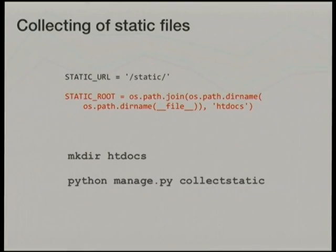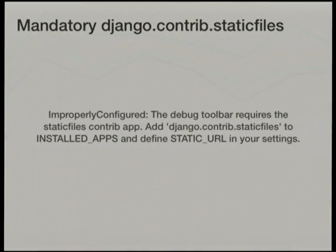Django has a static files application, but if using a WSGI server integrated with a real web server like mod_wsgi, it's much better to use that real web server for static files. We therefore set up a location for static files and run the Django 'collectstatic' management command to collect together all static files from the different installed applications, including Django debug toolbar. Whatever you do, do not remove 'django.contrib.staticfiles' from installed apps, as Django debug toolbar will cause everything to fail if it doesn't see it.